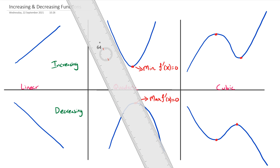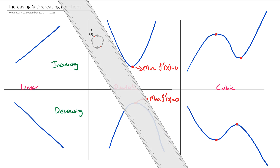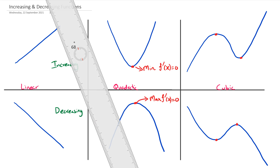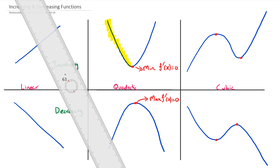To figure out when it's increasing and when it's decreasing, we take the ruler again. On the left-hand side of the parabola — everything highlighted yellow — if I put the ruler it's actually pointing down. So in the parabola's case it's decreasing when x is less than the turning point value of x. Let's say this point here is 8; then it's decreasing when x is less than 8.